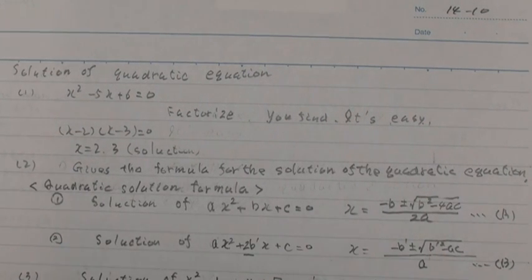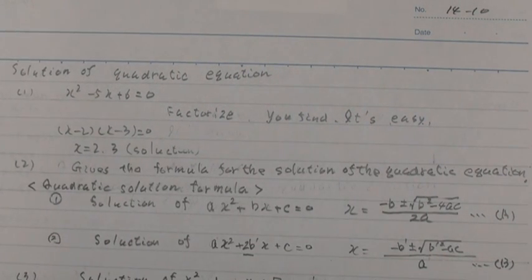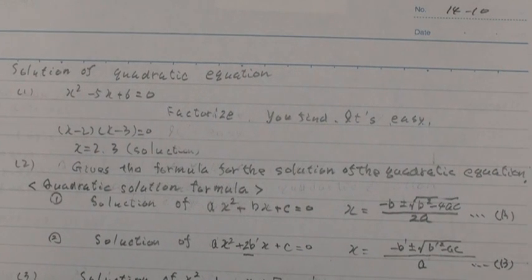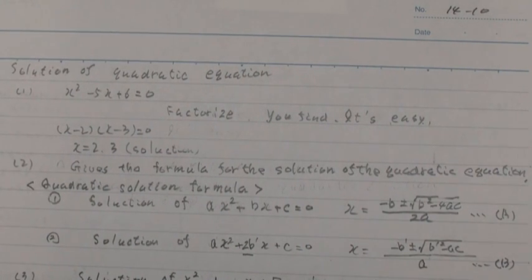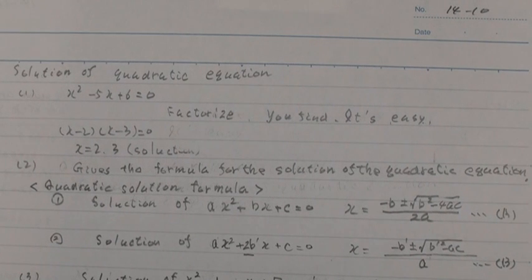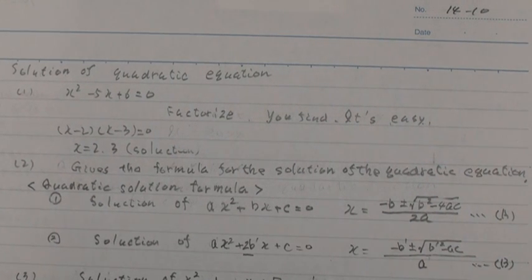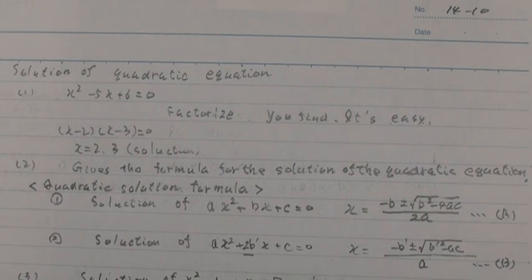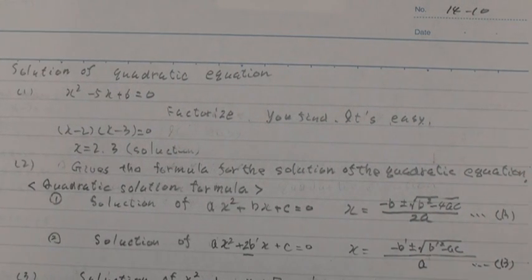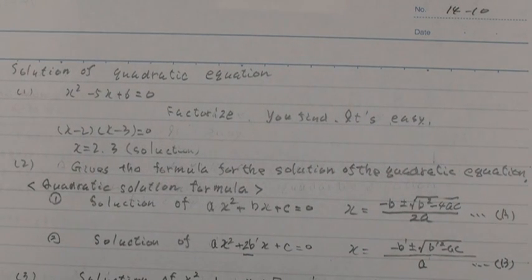Hello everyone. Number 1410: solution of quadratic equation. Parenthesis 1: x squared minus 5x plus 6 equals 0.